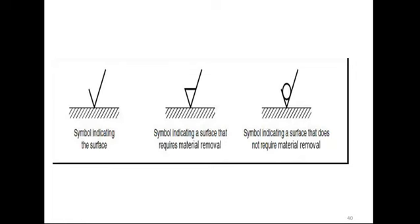In today's lecture we stop here. We have seen what is meant by evaluation length, what is meant by stylus, how we measure and what kind of graph we observe. We also saw some symbols used on actual drawings, and examples of equipment including Telesurf and portable instruments. I hope you have understood the concepts discussed today, and whatever remains will be covered in our next lecture. I appeal you to subscribe to my channel so you will not miss notifications. Thank you very much for listening carefully to this lecture.